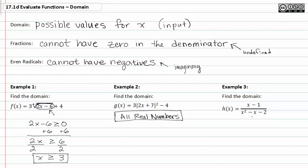Let's look at example three. Notice that this entire function does happen to be a fraction. We can't have any values that would cause the denominator to be zero. So we have to factor the denominator.